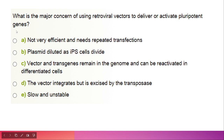What is the major concern of using retroviral vectors to deliver or activate pluripotent genes? The options include being not very efficient, and plasmid dilution in iPS cells. The correct option is: the vector integrates and remains in the genome and can be reactivated in the differentiated cells.